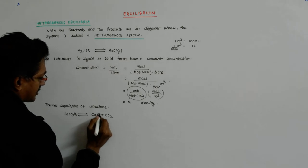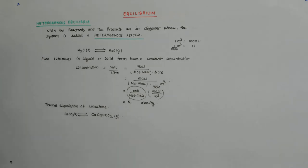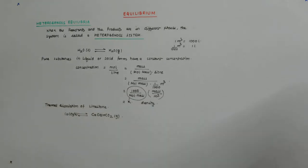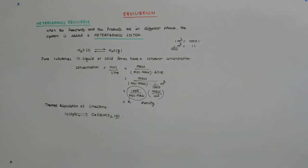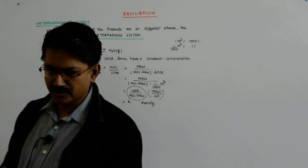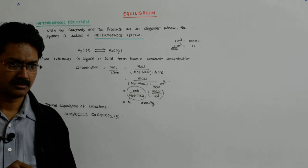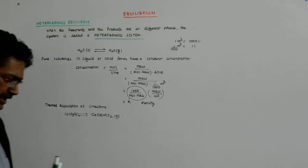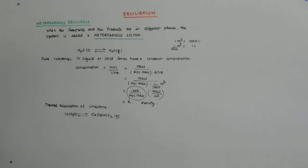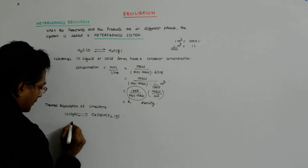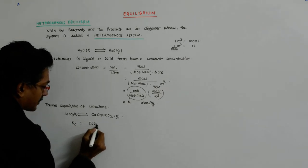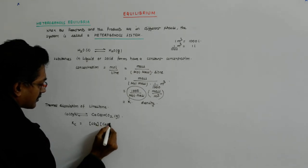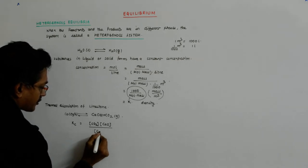Limestone is a solid; calcium oxide is also a solid, while CO2 is a gas. How do I write the equilibrium constant for this? Kc is equal to concentration of CO2 multiplied by concentration of CaO, divided by concentration of CaCO3.